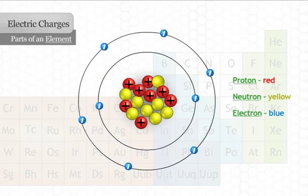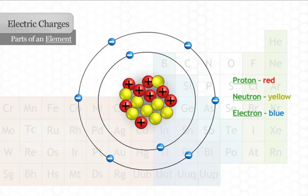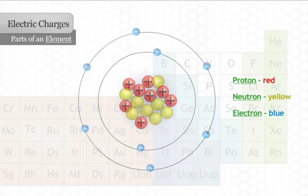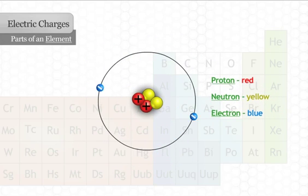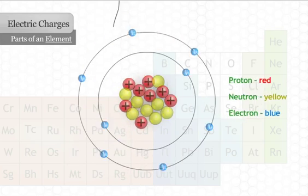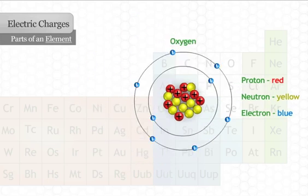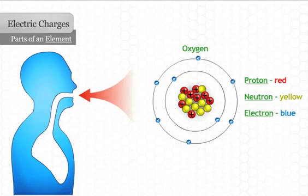These three particles are the key to electric energy. The number of protons in an atom defines what type of element the matter is. For example, if an atom has two protons, it is one atom of helium, which is the gas used to fill balloons at birthday parties. If an atom has eight protons instead, it is an atom of the element oxygen, which is a gas that our bodies use.